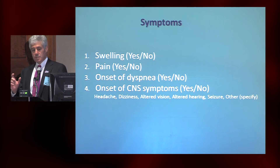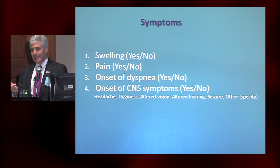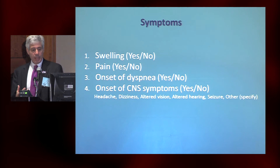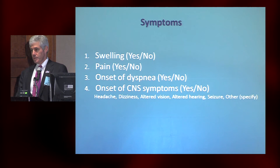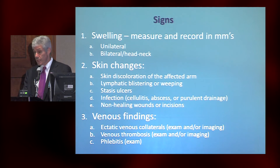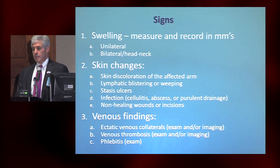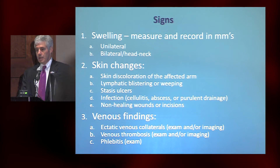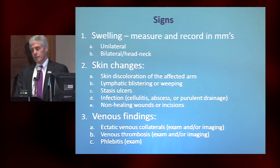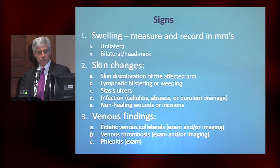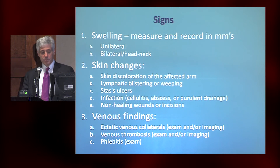Very simply, we need to report symptoms. Symptoms fall into four categories: swelling yes or no, pain yes or no, onset of dyspnea yes or no — which is more important for central or bilateral thoracic central vein obstruction — and central nervous system symptoms yes or no. There are three signs: reporting swelling with a methodology for recording the amount, reporting unilateral versus bilateral or head and neck involvement, skin changes such as discoloration, lymphatic blistering or weeping, stasis ulcers, infection, non-healing wounds, and venous findings including ectatic collaterals, venous thrombosis, and phlebitis.